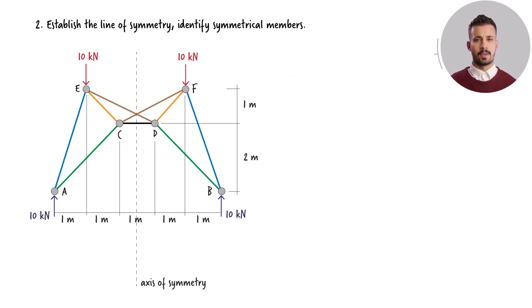To determine the member forces for the entire truss, it is necessary to examine only one half of the structure. We will focus on analyzing the right half of the truss, with a particular emphasis on formulating and solving equilibrium equations for three specific joints: joints B, F, and D.